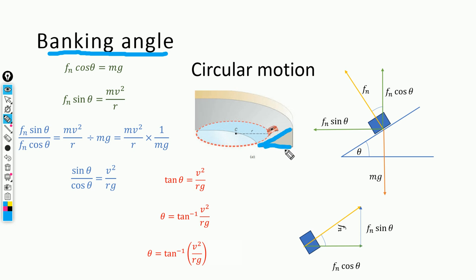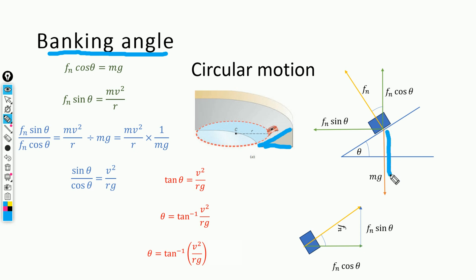That is why we need banking angle and banking of the road. This inclined road is known as a banked road, and this theta here is the banking angle. We are going to derive an expression for the banking angle relating velocity to the angle. For example, we have a car coming this way on an inclined banked road, and the weight of the car is denoted by mg, acting downward.